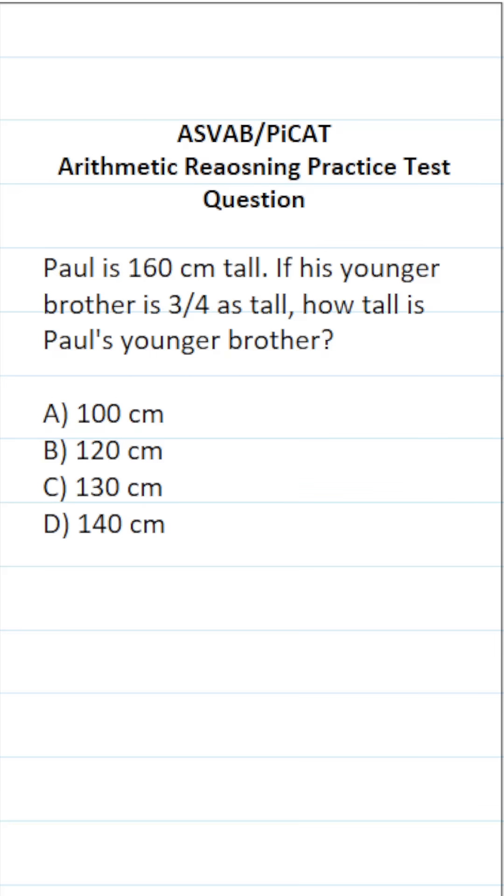This arithmetic reasoning practice test question for the ASVAB and PICAT says, Paul is 160 centimeters tall. If his younger brother is 3 fourths as tall, how tall is Paul's younger brother?